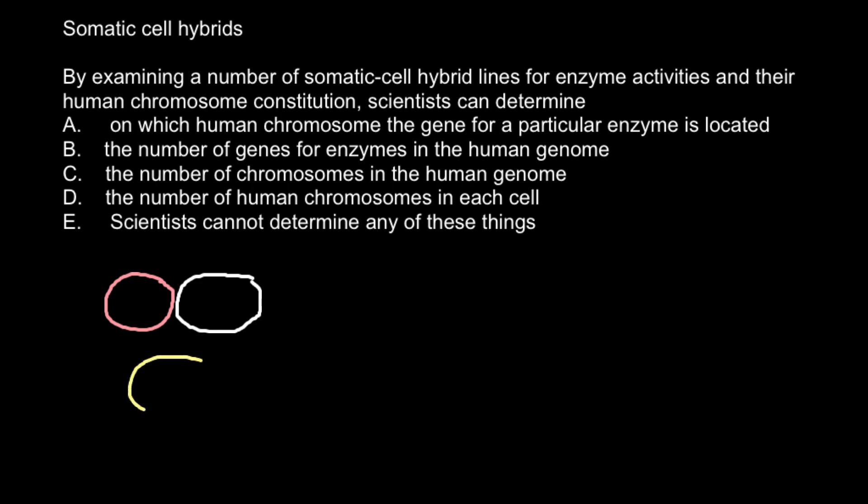So after we hybridize these two cells, we are going to get a hybrid that would have one nucleus. The nucleus also hybridizes, and in the nucleus we would find both chromosomes from the human and also chromosomes from the mice. So this is going to be a nucleus with two types of chromosomes.